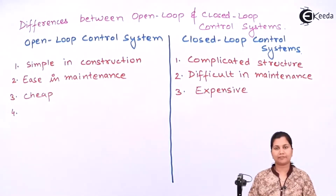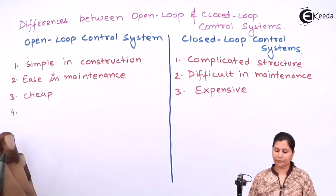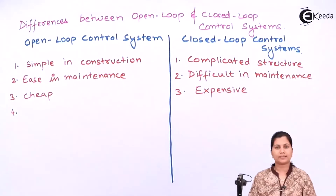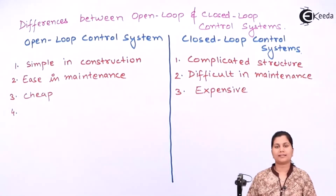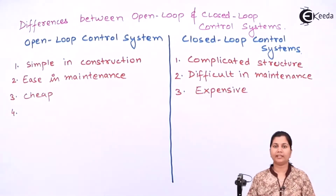The next difference is that the open loop control system is very slow in its working. Whereas the closed loop control system is very fast.